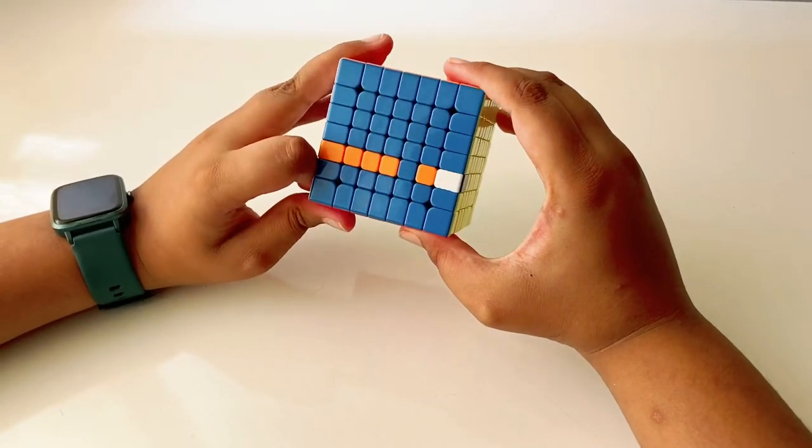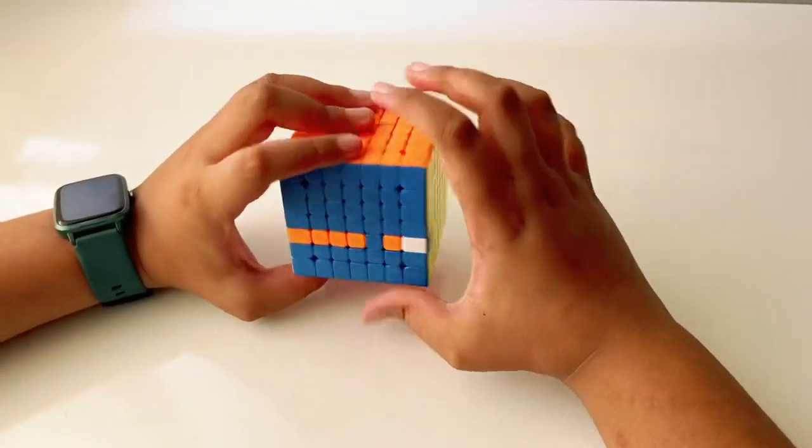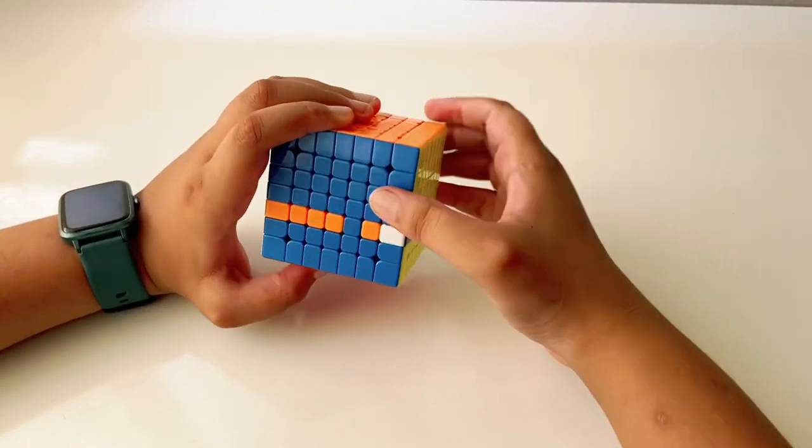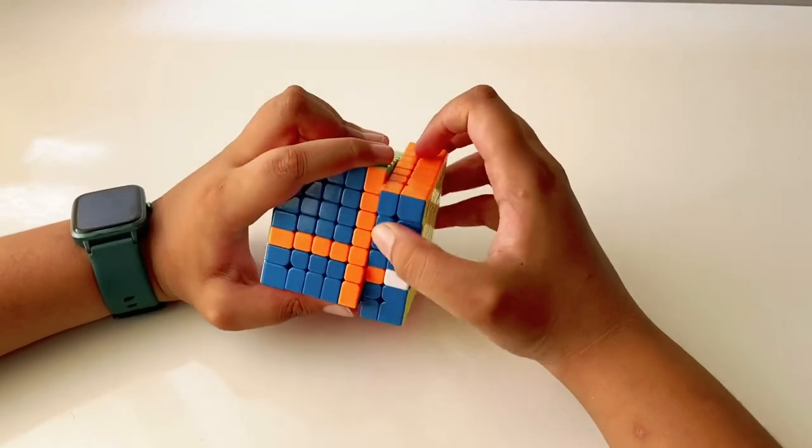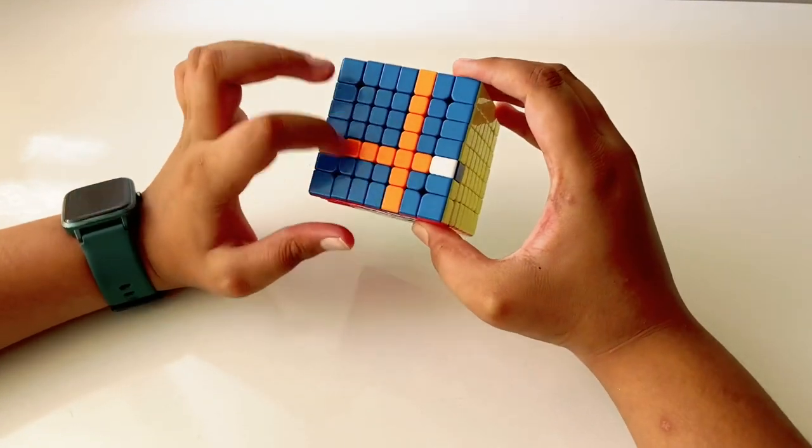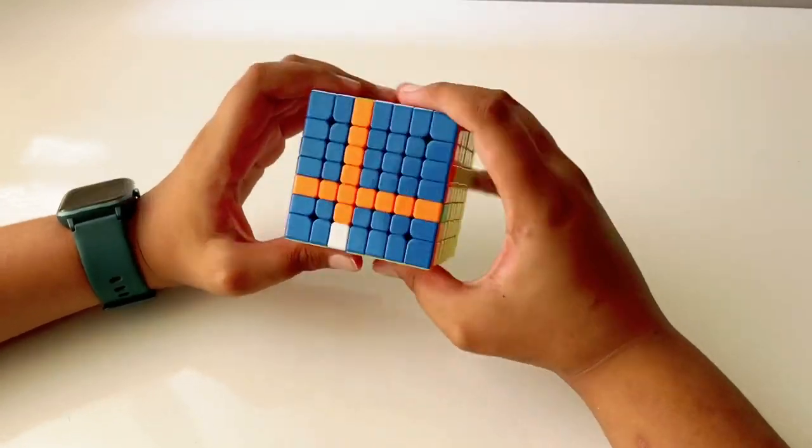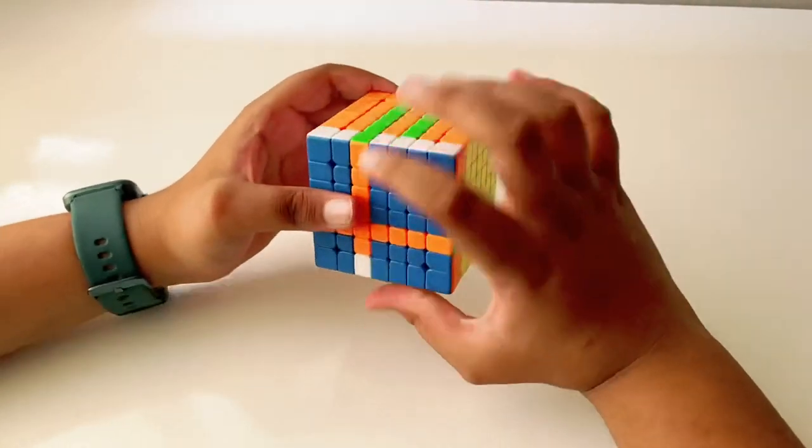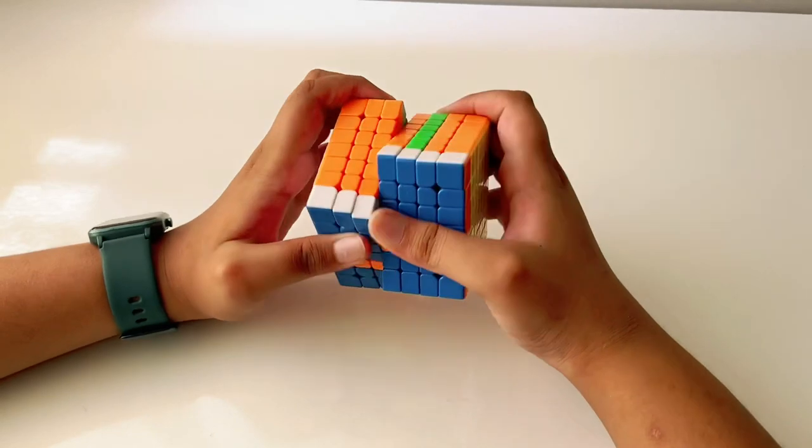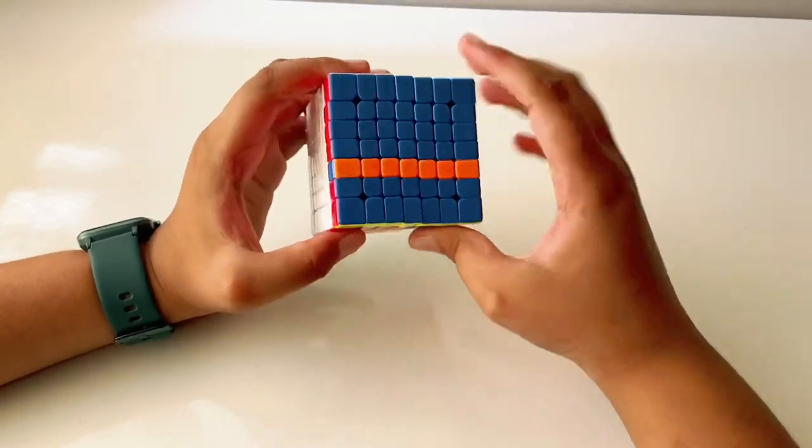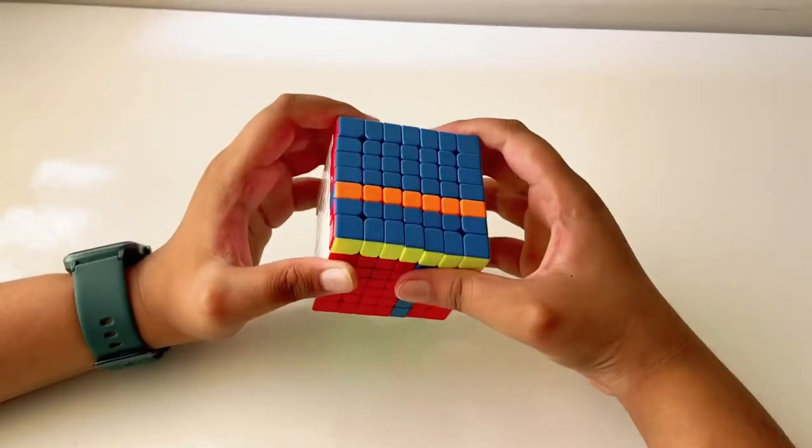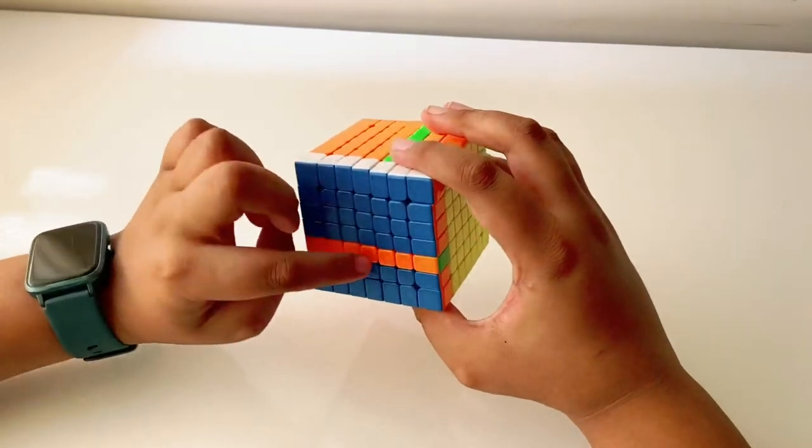Now we move this layer down so that orange matches with orange. Next, again we do the F, but this time we do the opposite, and then we'll take it up. So over here, as you can see, we have created this line, and now we just have to take this up over here.